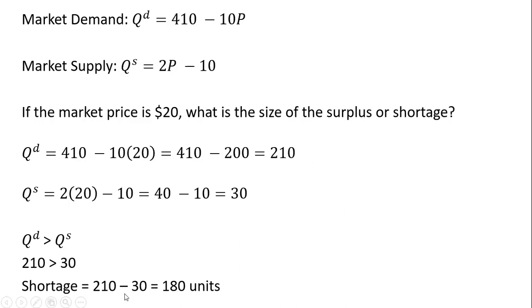210 minus 30 means that there's consumers out there that would like to buy 180 more units than is currently being made available by sellers. Alright, let's move on. Same market demand, same market supply.